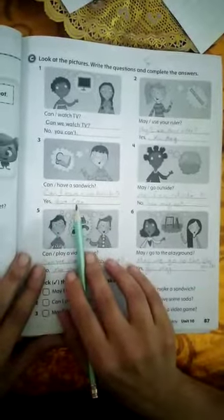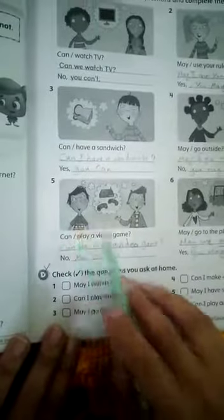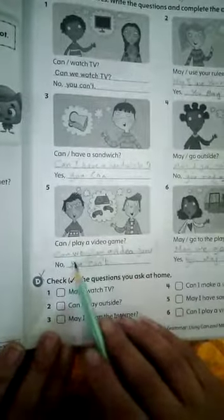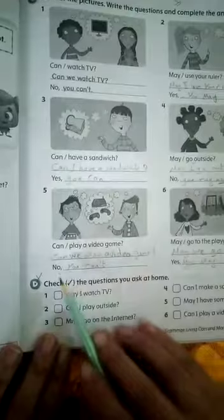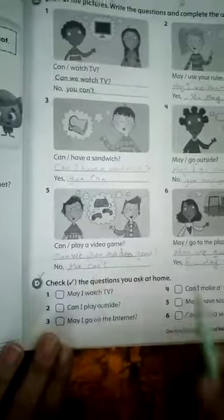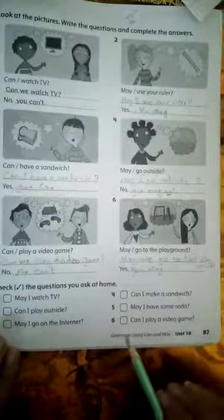Four, may I go outside? No you may not. Number five, can we play a video game? No you can't. May we go to the playground? Yes you may.